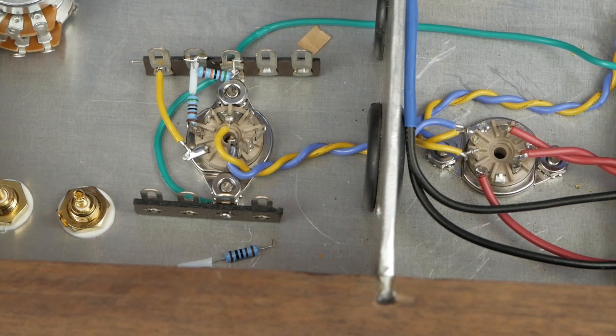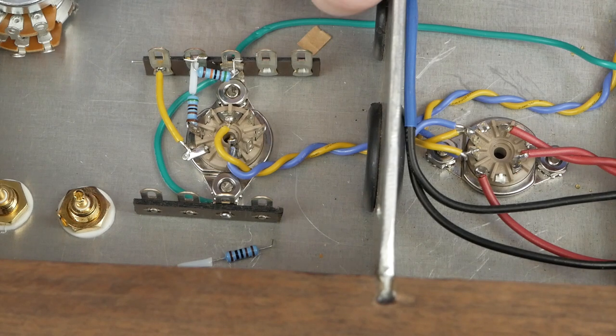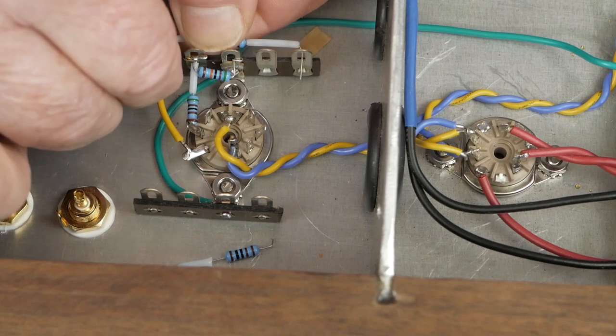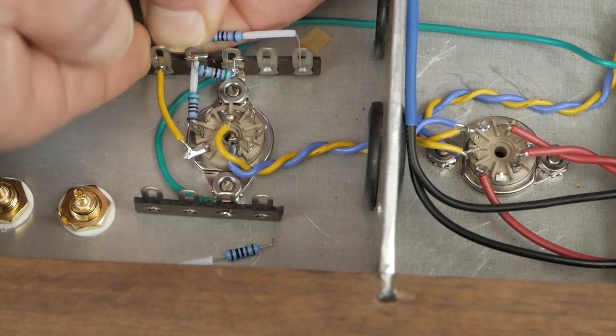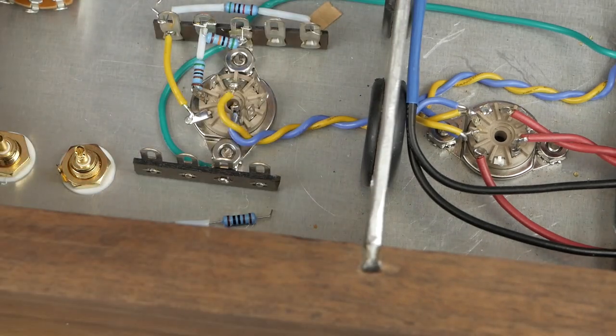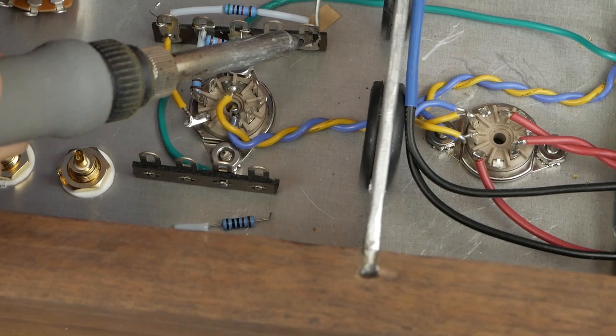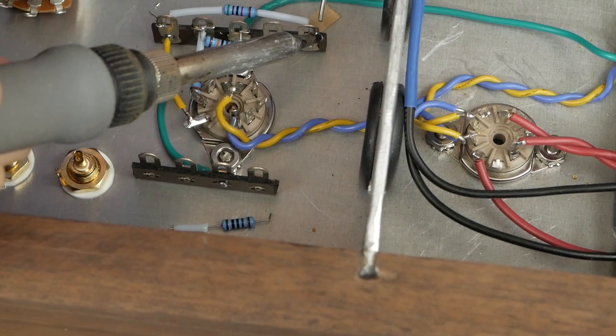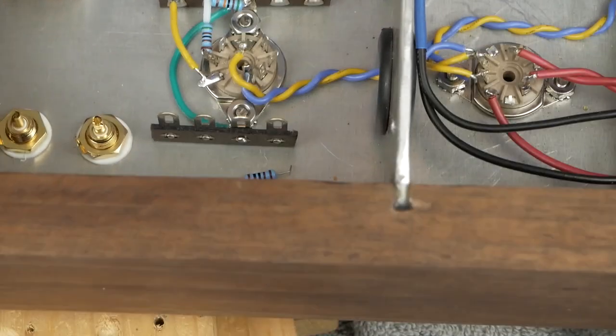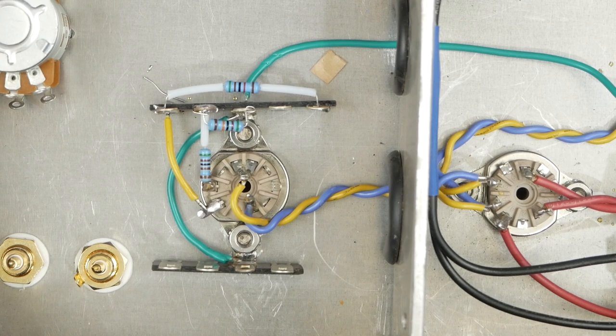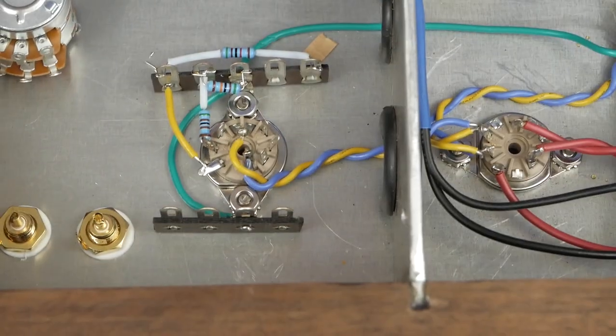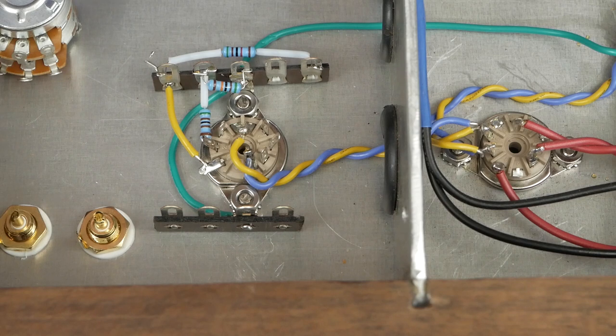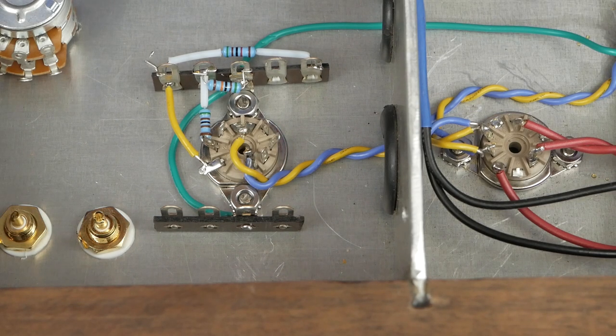Then the next thing we have is our plate load resistor, and it's going to go across like this. So we're going to bend that around. It's going to look like that, going across the top here over to here. But we'll do that in a minute. I'm going to go ahead and try to get all these parts around the tube soldered into place.